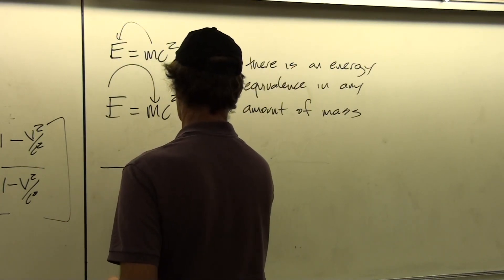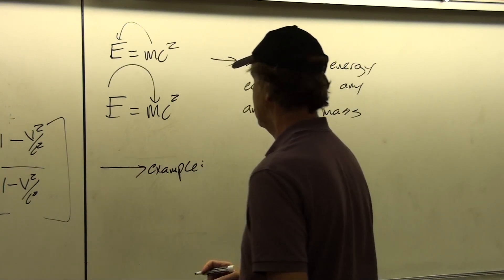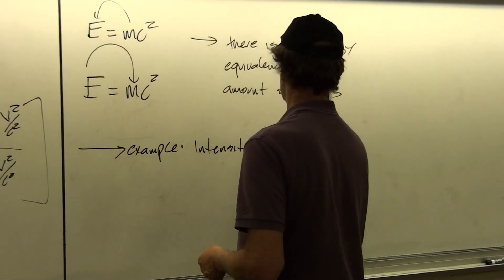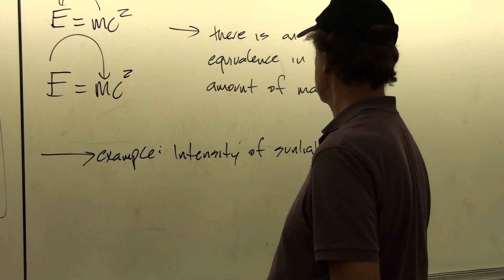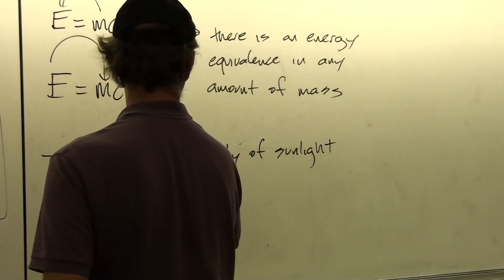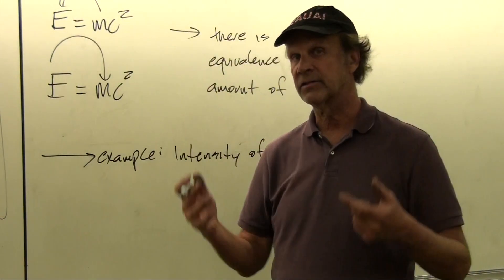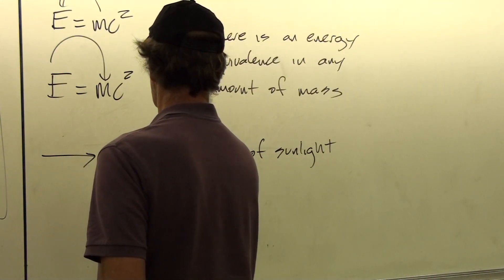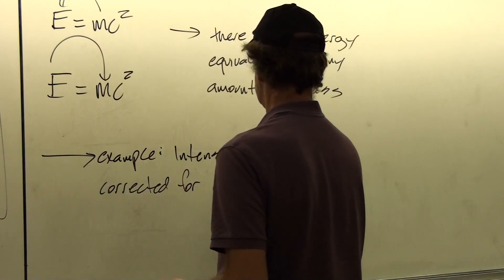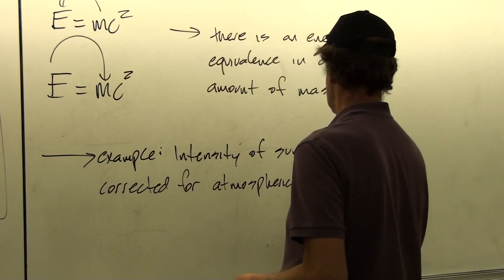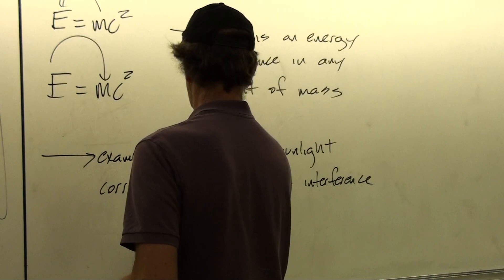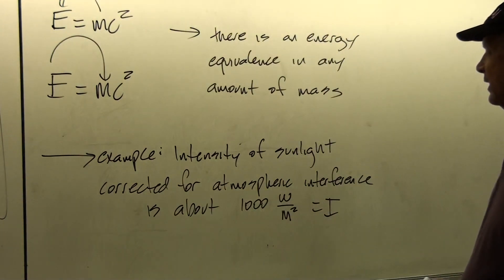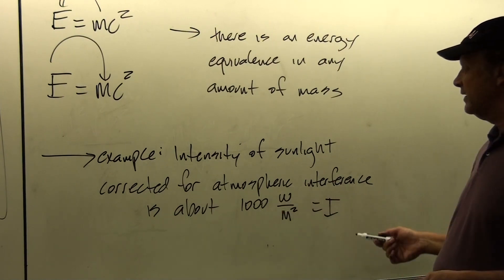In the next example, let's look at an intensity problem with sunlight. The intensity of sunlight at the top of the Earth's atmosphere — corrected for the fact that some light is absorbed by the atmosphere — is about 1,000 watts per square meter. That's an intensity, and you may recall from Physics 208B that intensity is power per unit area.